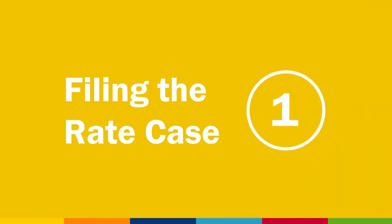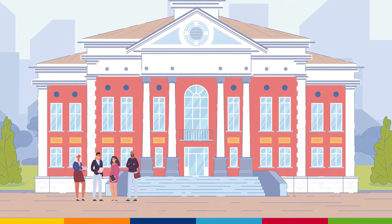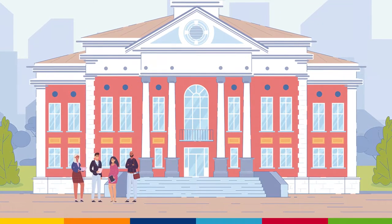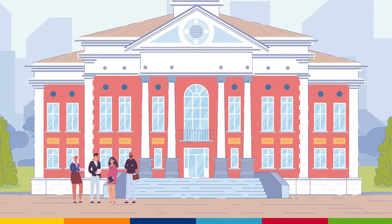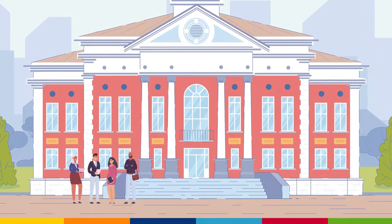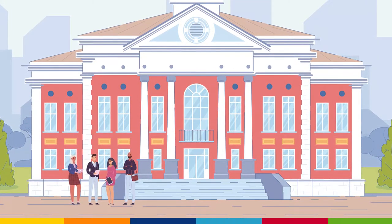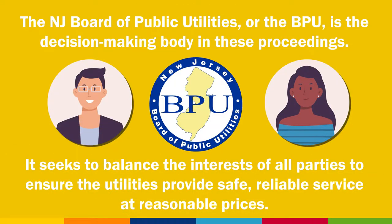Step 1 – Filing the Rate Case. The first step in a rate case is to file a petition with the New Jersey Board of Public Utilities that describes the request and provides the data supporting the request. The New Jersey Board of Public Utilities, or the BPU, is the decision-making body in these proceedings. It seeks to balance the interests of all parties to ensure the utilities provide safe, reliable service at reasonable prices.